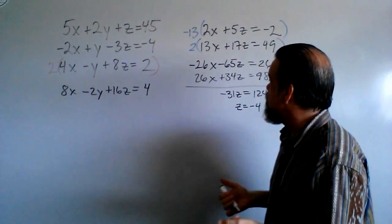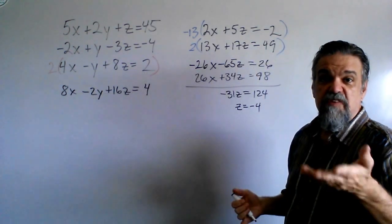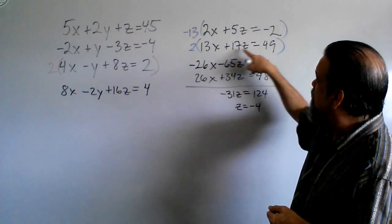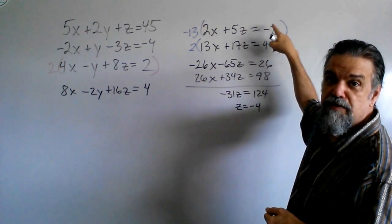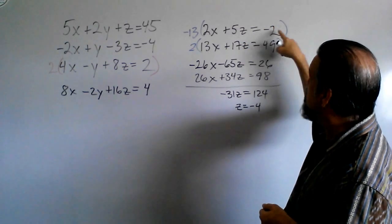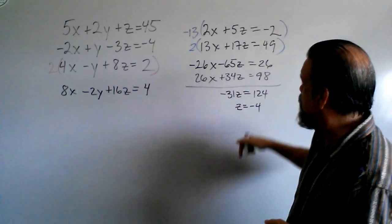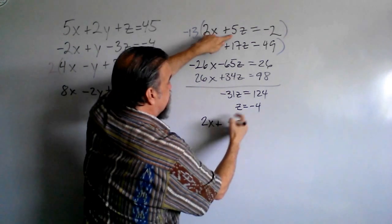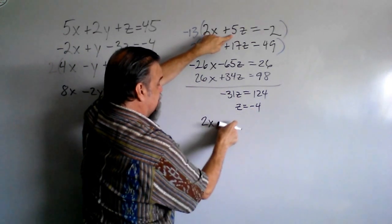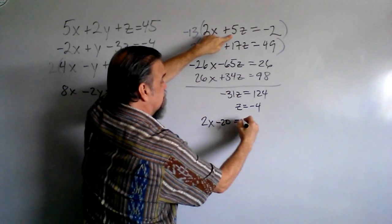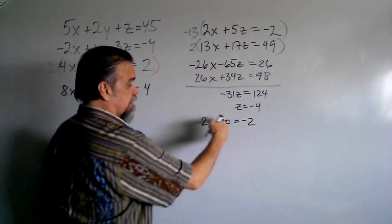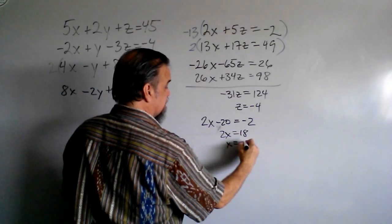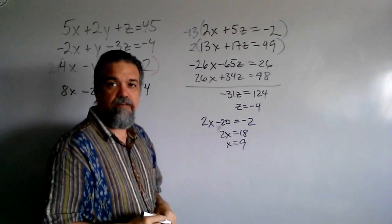Now we need to find our x's and our y's. Which one do we do first? The x. Why? Because look, I know what z is now, and I can just plug it into one of, actually, let's do that one, the one with smaller numbers. I'll plug it into this equation right there. So now I've got 2x plus 5 times negative 4, let's call that minus 20, equals negative 2. Adding 20 to both sides, I get 2x equals 18, so x must be 9. Great.